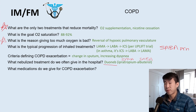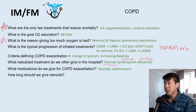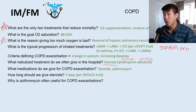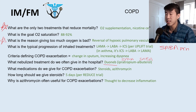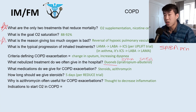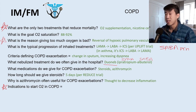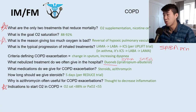Medications to treat a COPD exacerbation: steroids and azithromycin. We give steroids for five days based on the REDUCE trial, which compared five days versus 14 days and found the five-day group had better outcomes. Azithromycin is thought to decrease airway inflammation and help recovery. The indication to start home oxygen in COPD is oxygen saturation less than 88% or PaO2 less than 55.